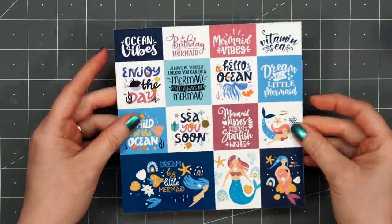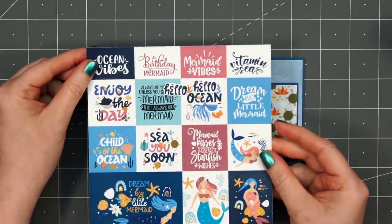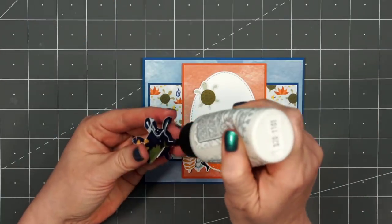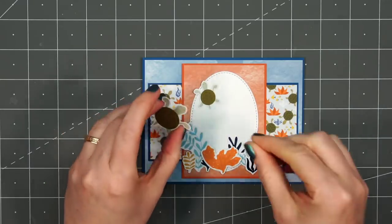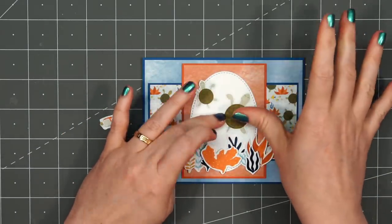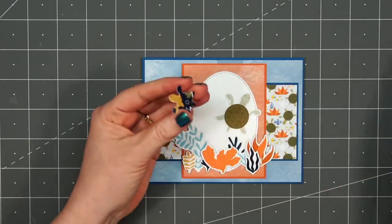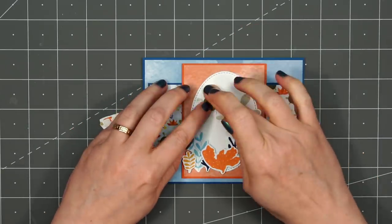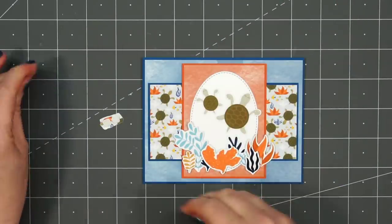For the sentiment on the card, I'll be using the word hello, and I cut this out from one of those cut-apart sentiments. It had hello ocean, and I decided just to use the word hello. I'll glue the turtles down with some liquid adhesive, and I'll be popping up the word hello with some of those thin foam squares. Once I have both of the turtles in place, I'll add the sentiment.